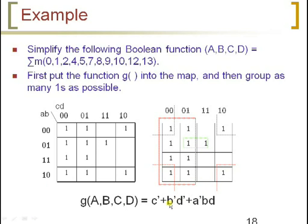The resultant expression would be this one. For the block of size 8, the values of a and b are continuously changing from 0 to 1, so we ignore a and b. Considering the column variables c and d, the value of c is constant holding 0, so it is represented as c-bar. For the next block of size 4, the value of a changes but b is constant at 0, represented as b-bar. The value of c changes and d is constant at 0, represented as d-bar.